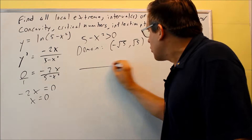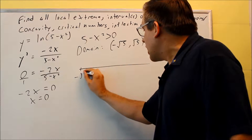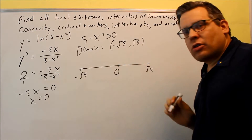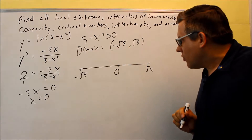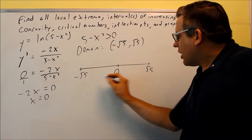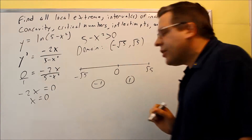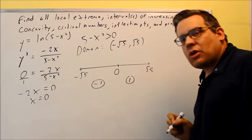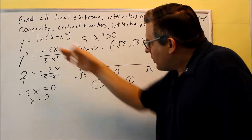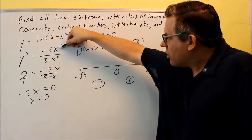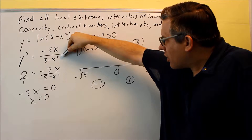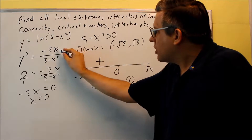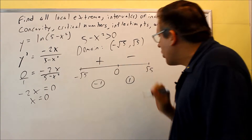Here's the number line: I've got negative root 5 on the left, root 5 on the right, and 0 in the middle. I'll pick test numbers — negative 1 and positive 1 — and plug them into the first derivative. For negative 1: the top gives a positive and the bottom gives a positive, so the result is positive. For positive 1: the top gives negative 2 and the bottom is positive, so the result is negative.